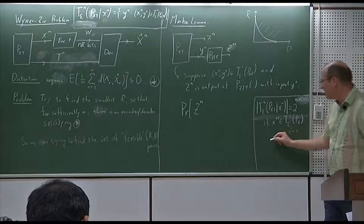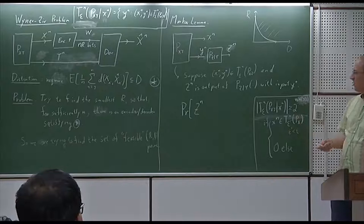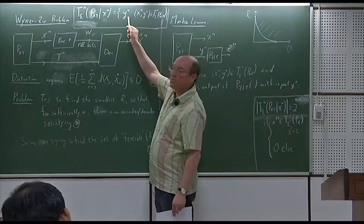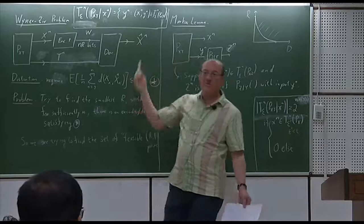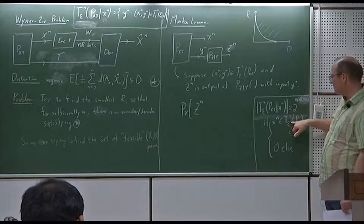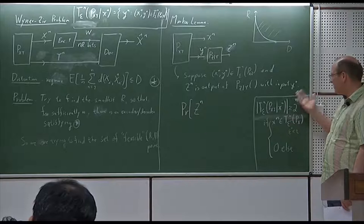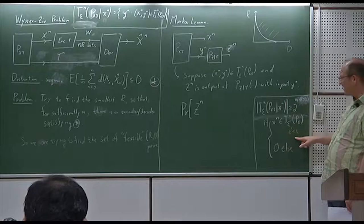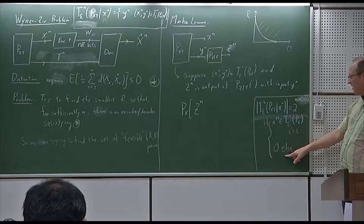It turns out it's 0 otherwise, because joint typicality implies marginal typicality. So if x_n is not typical, then we can't make the other one typical. It's certainly true if x_n is not epsilon-typical with respect to p_X — then it's definitely 0.